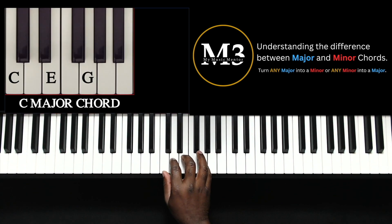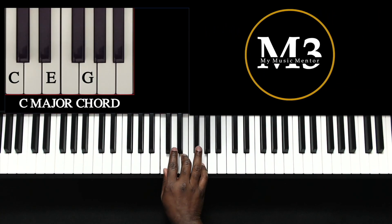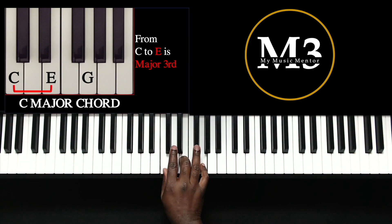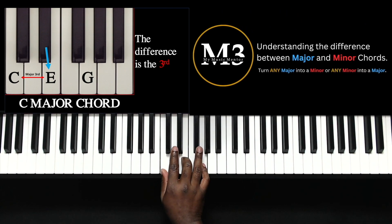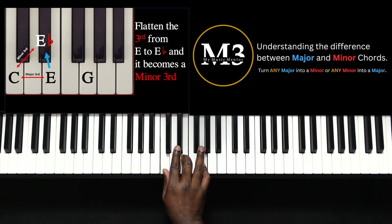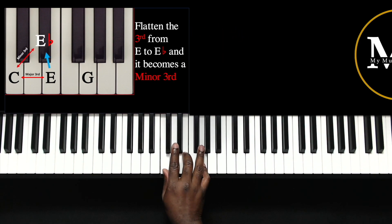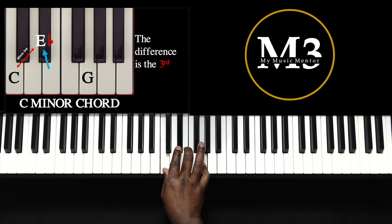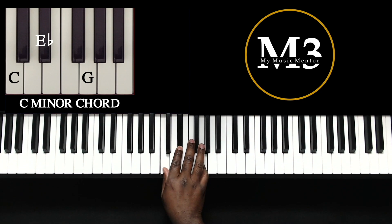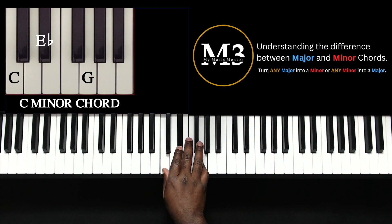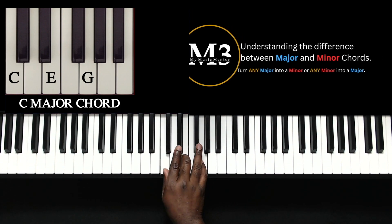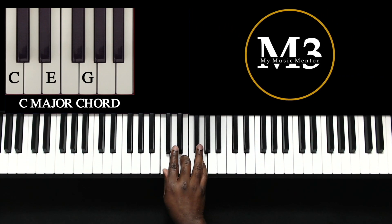Let's take C major for instance. We have C, E, G. From C to E is a major third. The difference between major and minor chords is the third. A major chord has a major third — from C to E. A minor chord has a minor third. You simply take the third in a major chord and flatten it down a half step, and then you have a minor chord. Notice how the minors sound darker than the major chords — kind of a dark sound versus a happy sound.